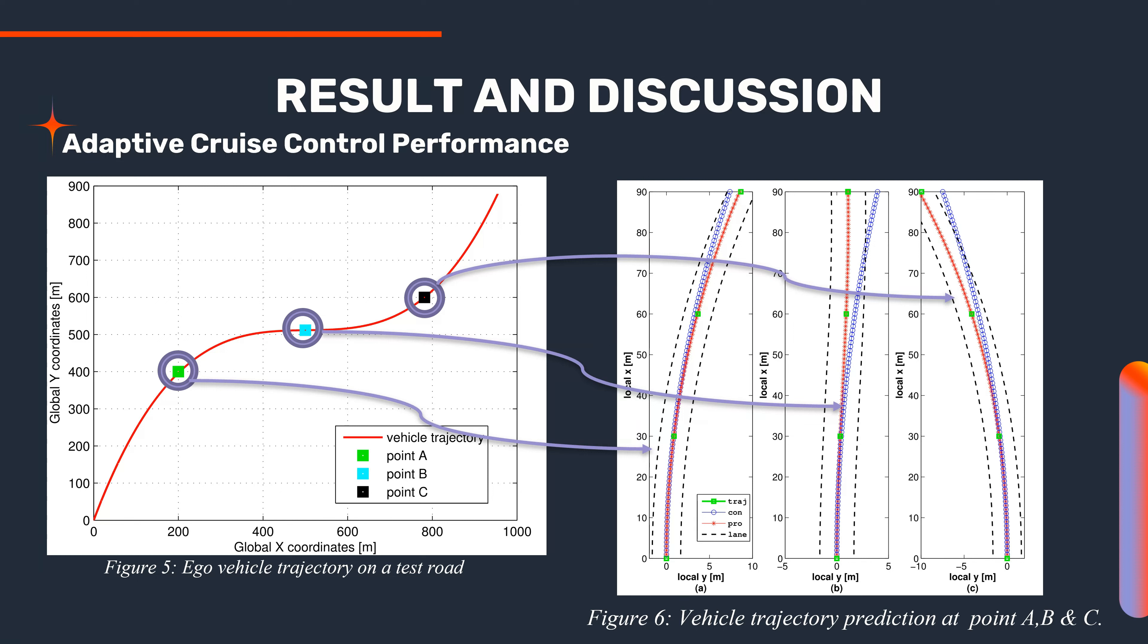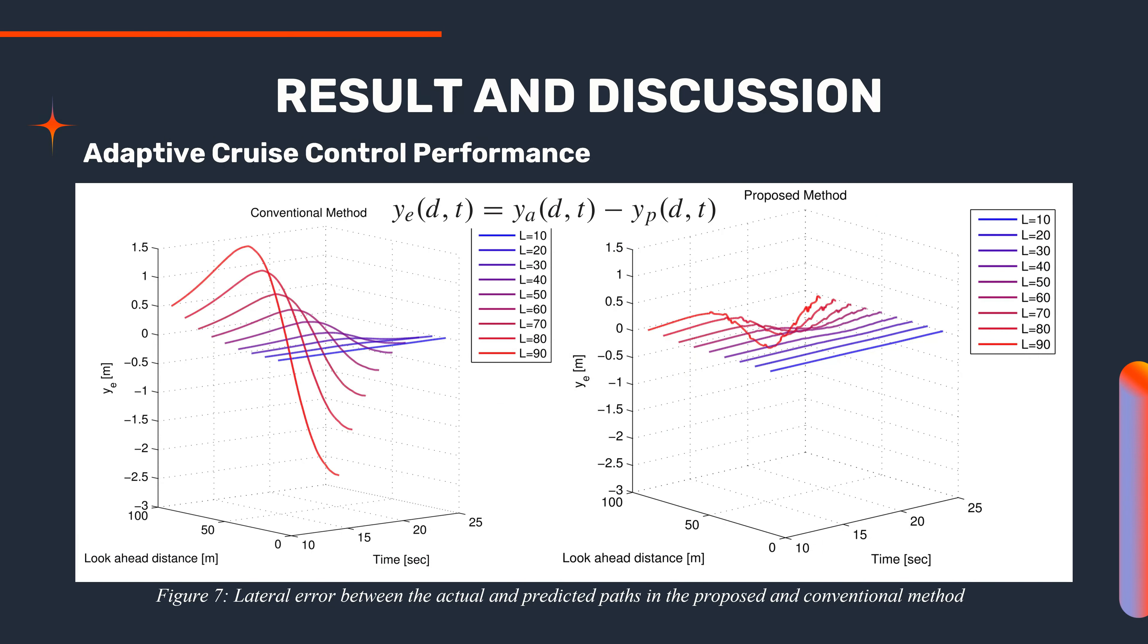In the proposed method, the curvature was used to predict the driving path of the ego vehicle with the yaw rate, while the conventional method only yaw rate was used. Because the curvature is considered, the proposed method can yield better path prediction performance than the conventional one.